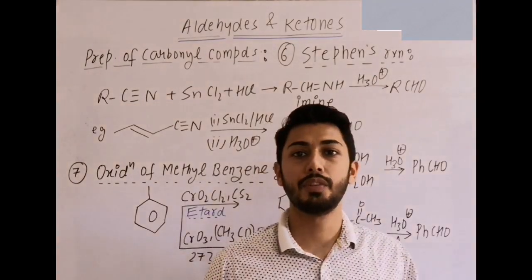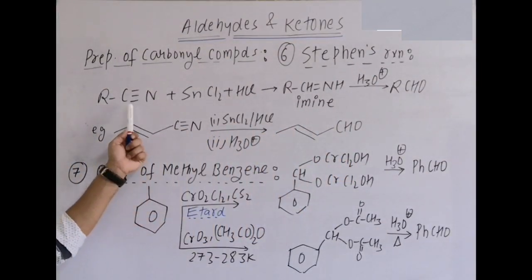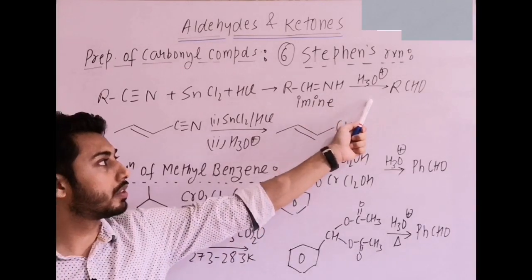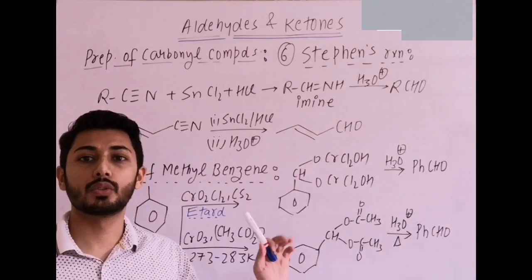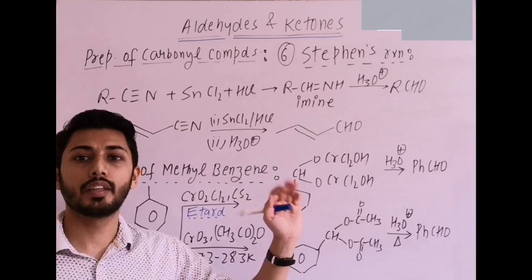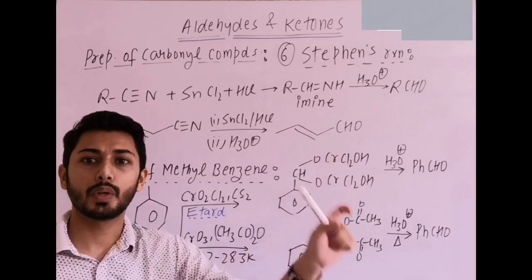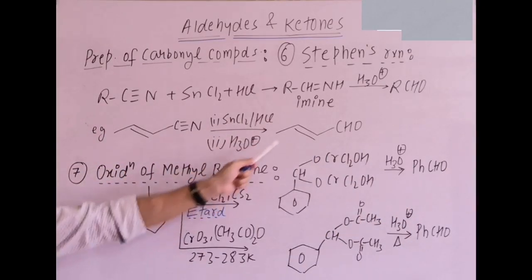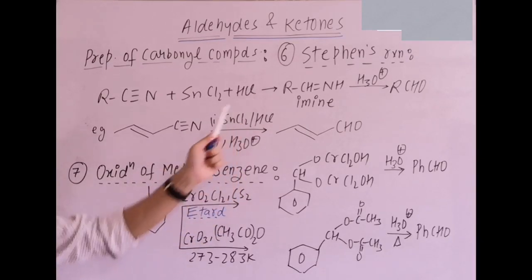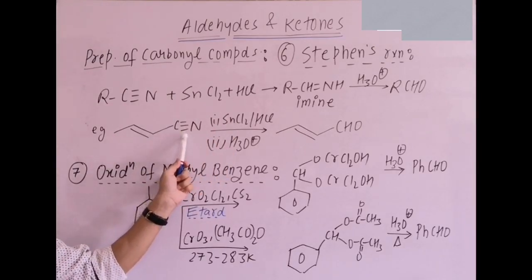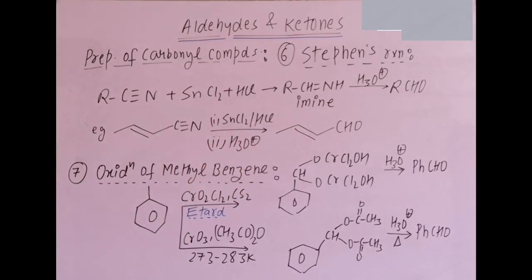Next: Stephen's reduction (Stephen's reaction). Nitrile (RCN) is treated with SnCl2/HCl, giving an imine intermediate, followed by hydrolysis to give aldehyde. This is just as important as Rosenmund reduction — Rosenmund uses RCOCl; Stephen's uses RCN. The reagents SnCl2/HCl followed by hydrolysis are key. This reagent will not reduce double bonds or triple bonds — it only reduces CN to CHO.